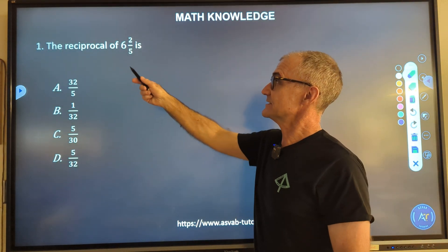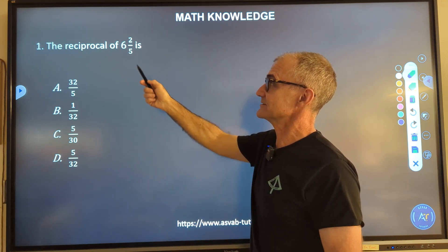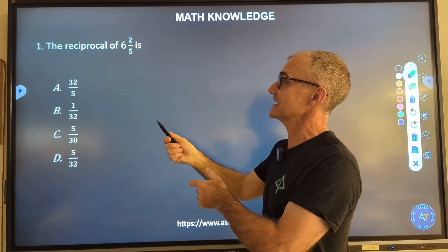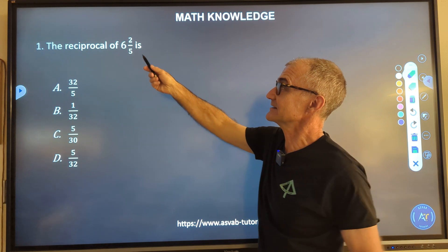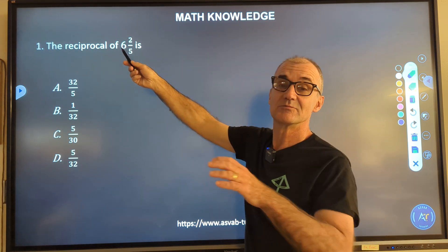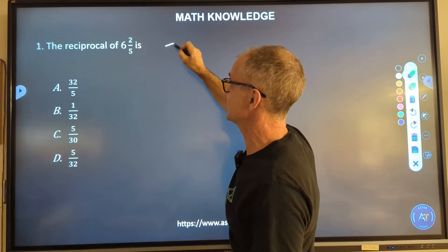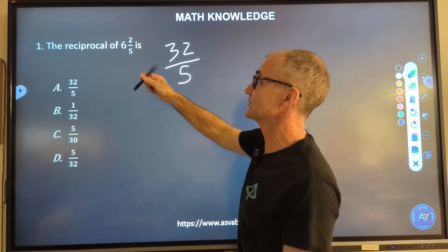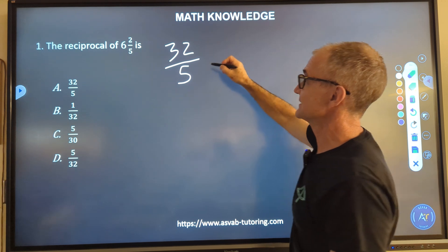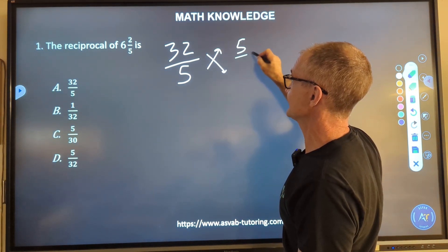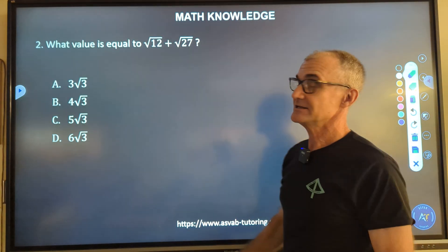Problem number one, the reciprocal of six and two-fifths. Well this is a mixed number, so there are two steps here. Step one is to convert it into a fraction, and then step two is to find the reciprocal. The way I convert that into a fraction is I take that six, multiply it by that five to get thirty, add the numerator to get thirty-two-fifths. Then I reciprocate it, which means turn it over, to give me five thirty-seconds, and that's answer D.